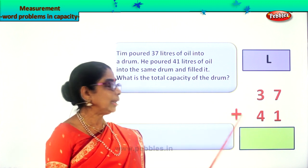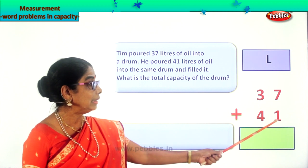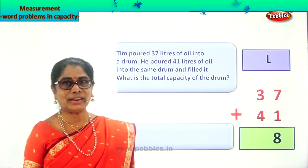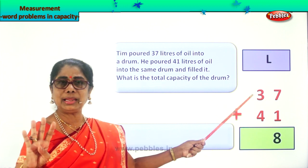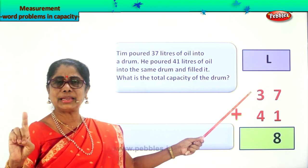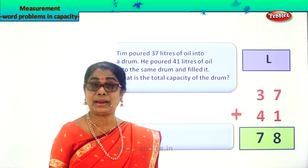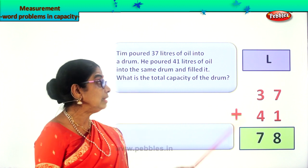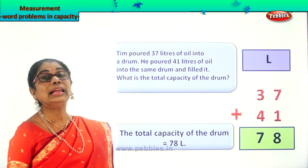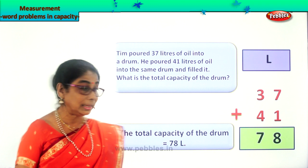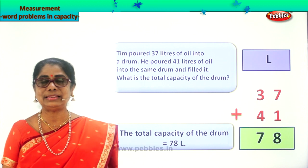Let's add and find the total capacity of the drum. We have 37 plus 41. What is 7 plus 1? 7 plus 1 is 8. Then 3 plus 4 — counting up: 5, 6, 7 — 3 plus 4 makes 7. So what is the total capacity of the drum? The capacity of the drum is 78 liters. The total capacity of the drum equals 78 liters of oil.